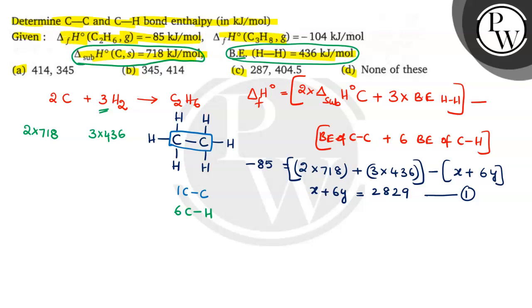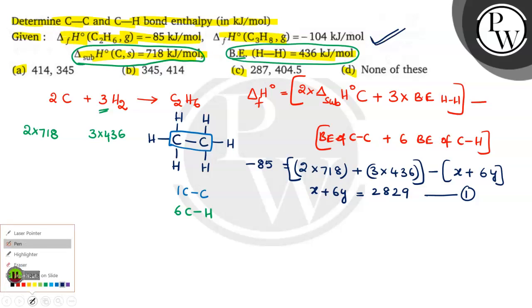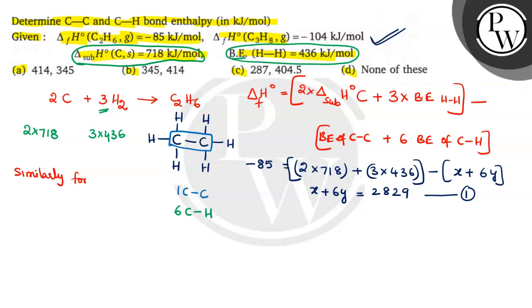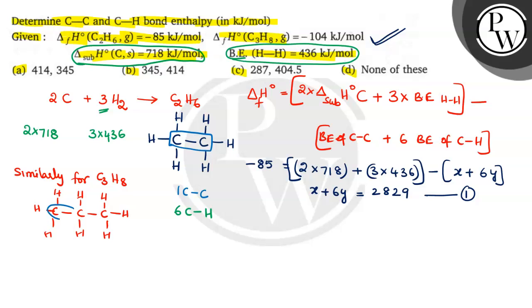Similarly for C3H8 — propane is given in the question. For C3H8, there are 3 carbons and 8 hydrogens. How many CC bonds are there? There are 2 CC bonds — this is one CC and this is another CC. So for propane, the expression will be 2X plus 8Y for the CH bonds.